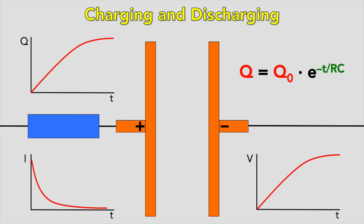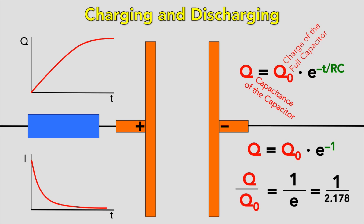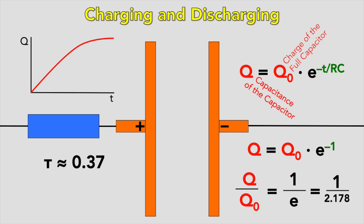The charge left on the plates of a capacitor discharging from full is given by the equation Q equals Q-naught multiplied by e to the power of minus t over RC, where Q-naught is the charge of the full capacitor, C is the capacitance, R is the resistance of the fixed resistor, and t is the time since discharging began. When t equals RC, then Q equals Q-naught times e to the power of minus 1, and therefore Q over Q-naught equals 1 over e, approximately 0.37. This is known as the time constant.